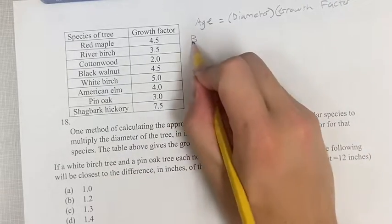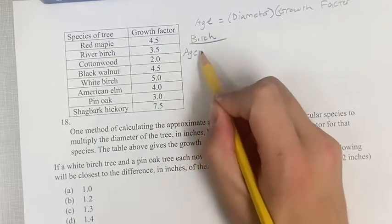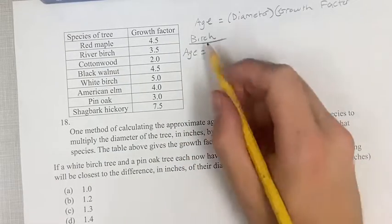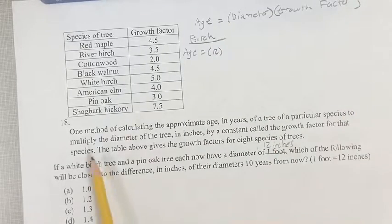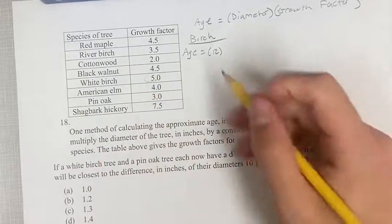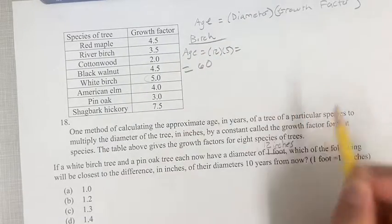So for the birch, we know that the age is equal to the diameter, which is 12 inches for both of these, times its growth factor. The growth factor for white birch is 5.0 or just 5. So the age of this birch is 12 times 5 or 60.